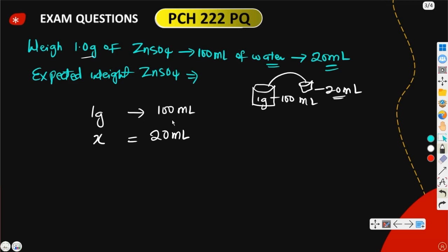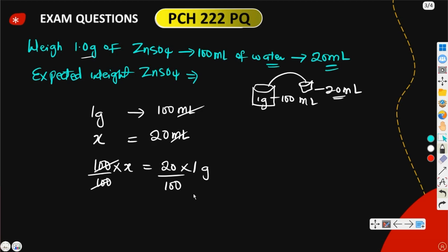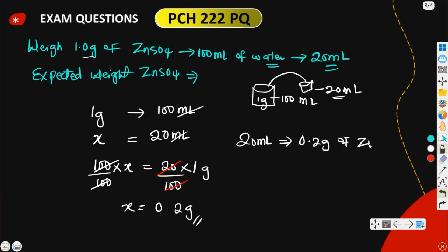Dividing both sides by 100, the 100s cancel and you get x equals 0.2 gram. So in the 20 ml that you are using for the standardization, there is 0.2 gram of zinc sulfate. This is the expected weight of zinc sulfate.